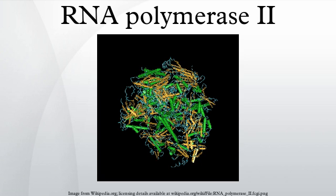RNA polymerase II is inhibited by α-amanitin and other amatoxins.